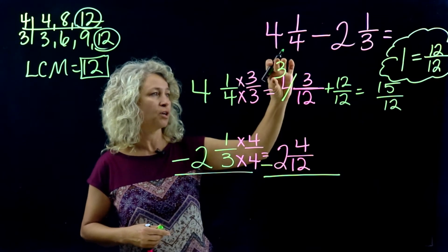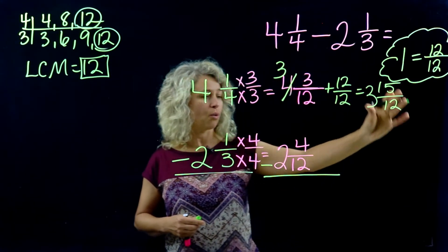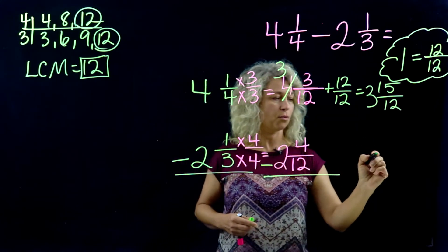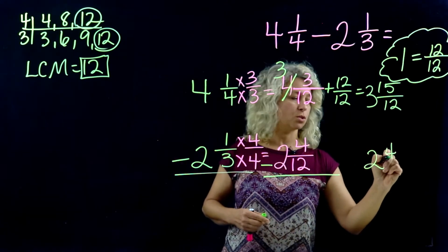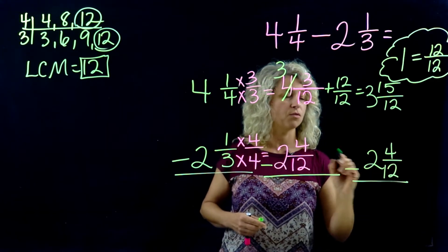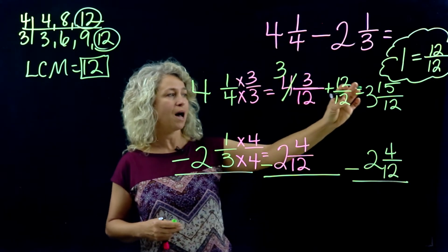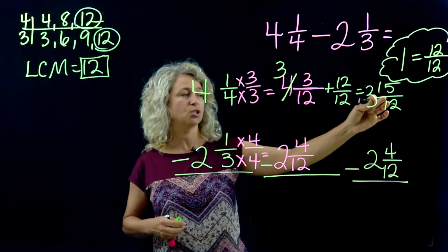So don't forget your 3. Let's add the 3 back to the original problem. Now here's our problem. We've regrouped, we've renamed. 4 3/12 has become 3 15/12. Don't worry that it's improper at this point, because after we subtract we'll work that out if it didn't work itself out.